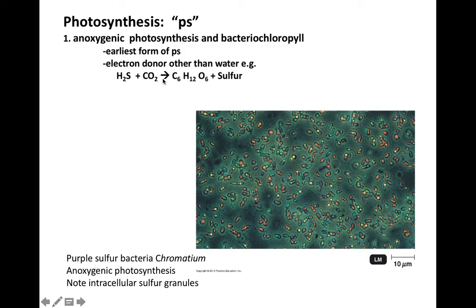This process requires bacteriochlorophyll and light as the energy source. Here is a really cool photograph of a special group of bacteria — the purple sulfur bacteria — that have bacteriochlorophyll and carry out anoxygenic photosynthesis. What's so cool is these refractile bodies inside the bacterial cells are actually granules, accumulations of elemental sulfur.